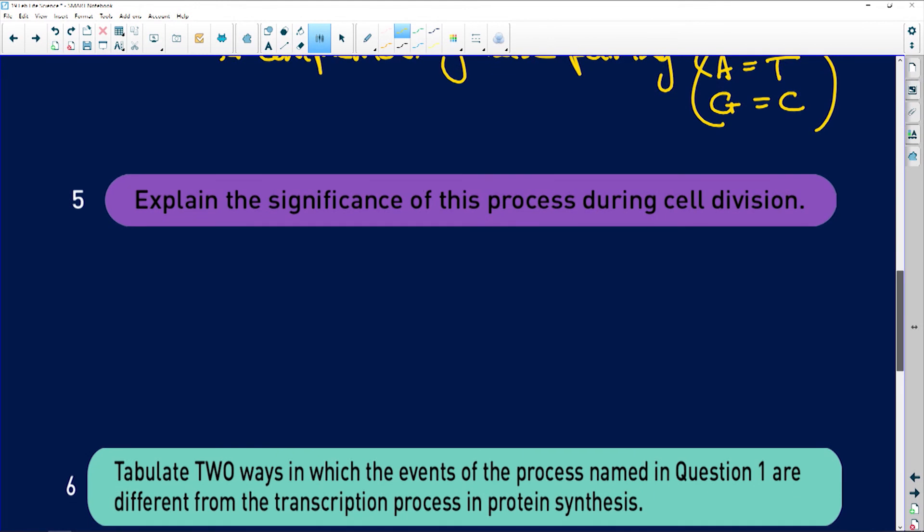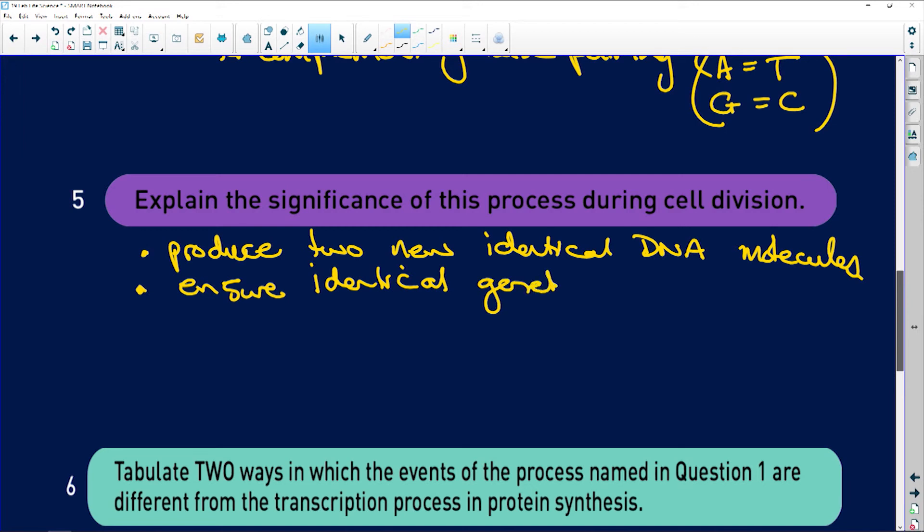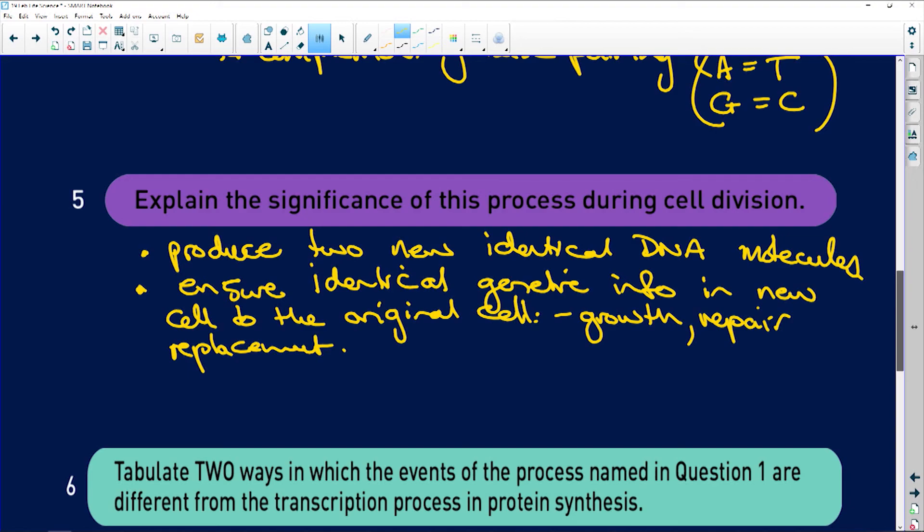Explain the significance of this. First of all, it produces two new identical DNA molecules. Second, to ensure identical genetic info in the new cell to the original cell, because remember you're going to use this for growth and repair and replacement. So you want the new cell to be identical to the old cell.